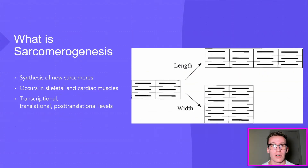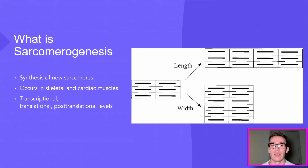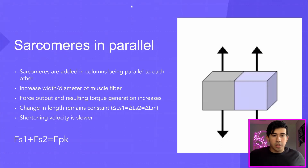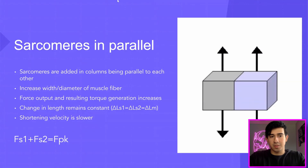So what is sarcomerogenesis? The suffix '-genesis' generally means the creation of something, so sarcomerogenesis just means the synthesis or creation of new sarcomeres. It can occur primarily in skeletal and cardiac muscles, though it hasn't really been observed in humans, and it can be affected at multiple different levels of gene expression — whether that's transcriptional, translational, or post-translational.